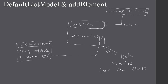This FruitModel will act as a data model for our JList, supplying the data at runtime. In the next video we will first create these FruitModelItems and then implement our FruitModel.